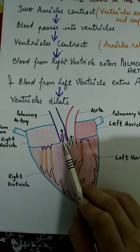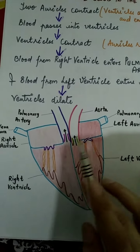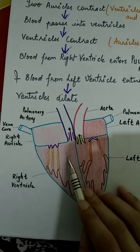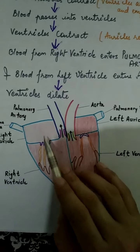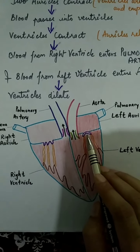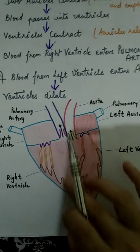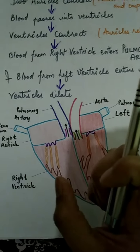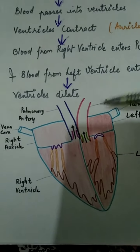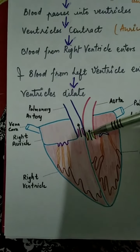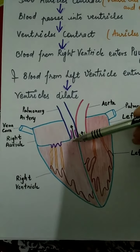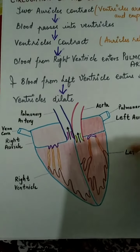These valves get open at this time. When the ventricles contract, you do not want the blood to enter back into the auricles, so the chordae tendineae keep these flaps intact in their position. No other place is left when the ventricles contract, so the pocket-shaped semilunar valves open and receive the blood from their respective ventricles.